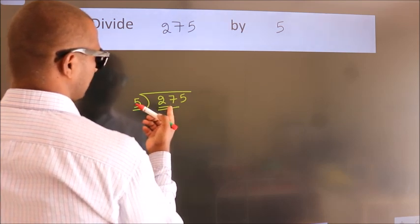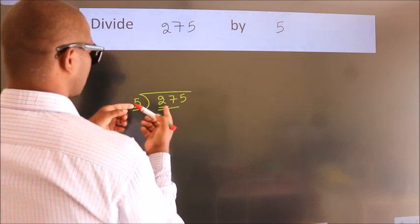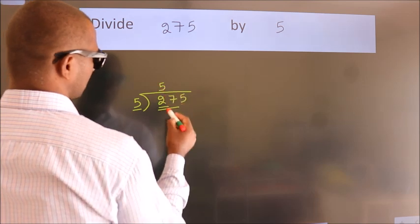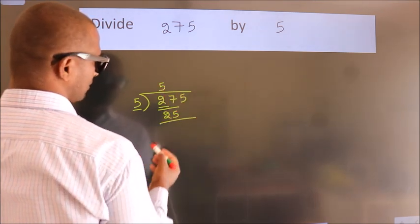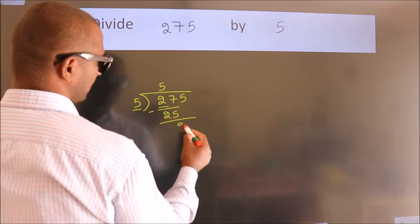A number close to 27 in the 5 table is 5 5s, which is 25. Now we should subtract. We get 2.